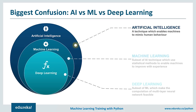Many people think AI, machine learning, and deep learning are all the same — they're wrong. Artificial intelligence is a broader concept of machines being able to carry out tasks in a smarter way. It covers anything that enables a computer to behave like humans. Think of the famous Turing test to determine whether a computer can think like a human.